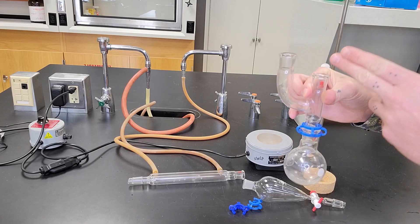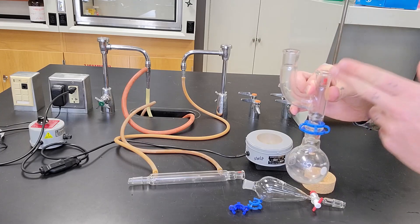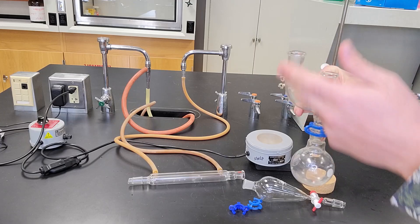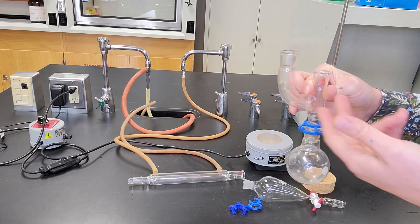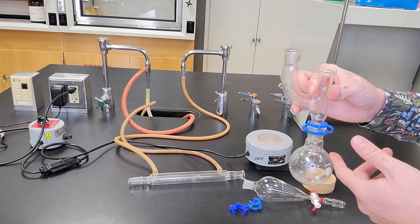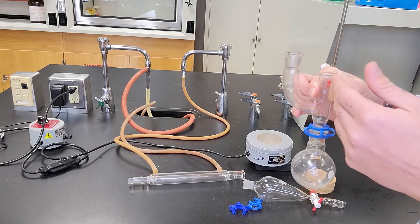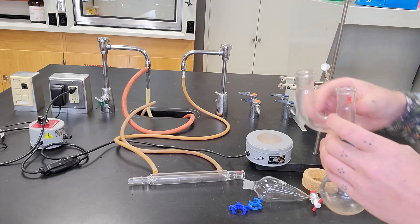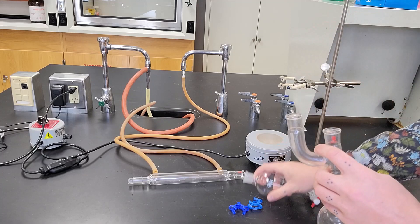Now the addition funnel generally goes in the port that's right above the reaction mixture. If we have it to the side, it may drip down and not actually get into the reaction flask. But if we have it directly above, we can guarantee that when it drops, it's going to go directly into the reaction flask.